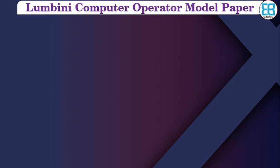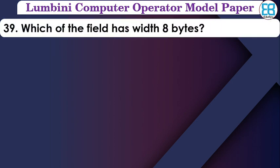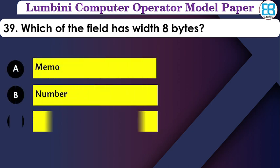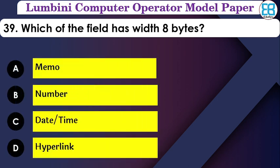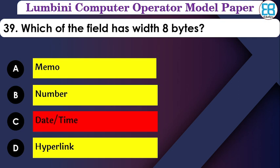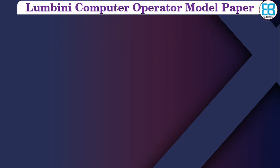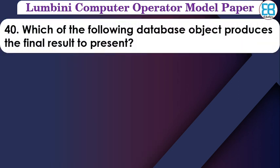Which field has a width of eight bytes? The options are: memo, number, date and time, hyperlink. The correct option is date and time — the date and time field has a width of eight bytes.